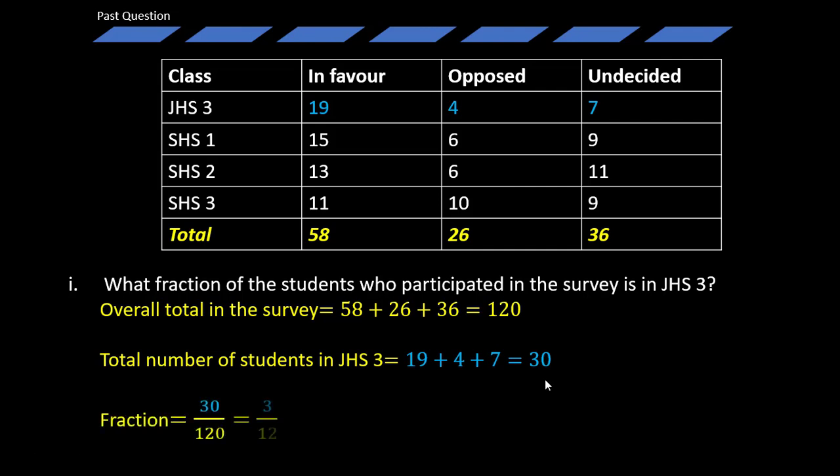So the fraction is simply going to be 30 over 120, which simplifies to 3 over 12, and can further be simplified to 1 over 4. It means the fraction of the students who participated in the survey that is for those in GHS3 is 1 over 4.